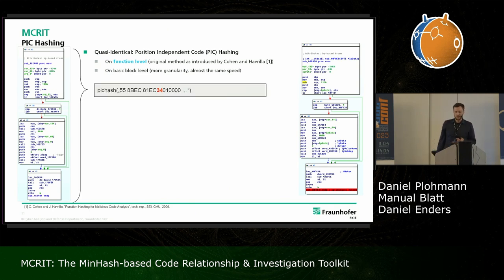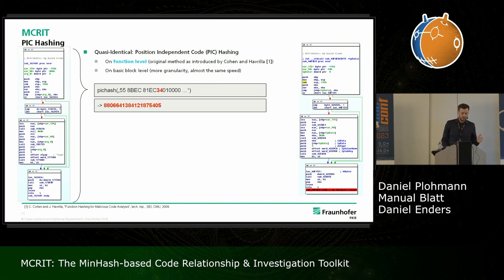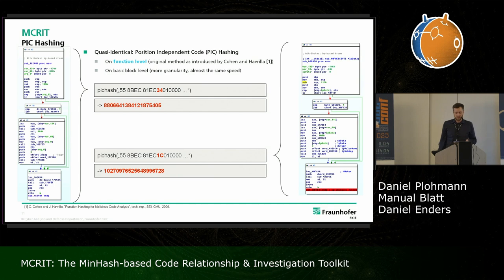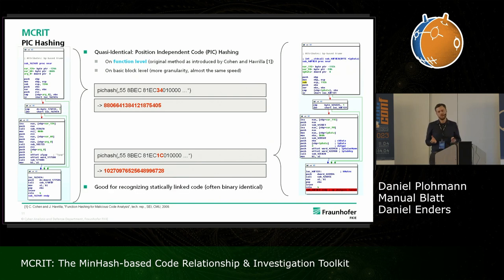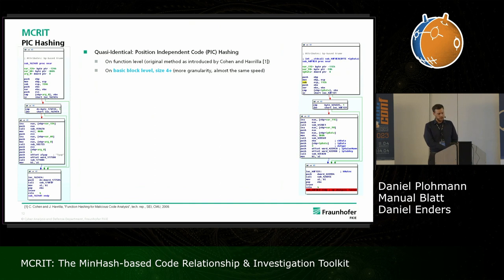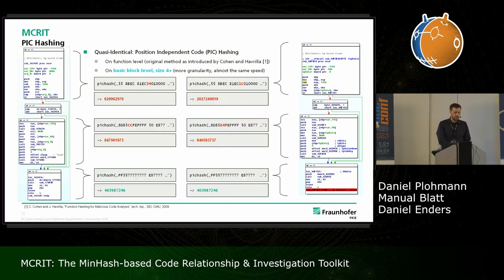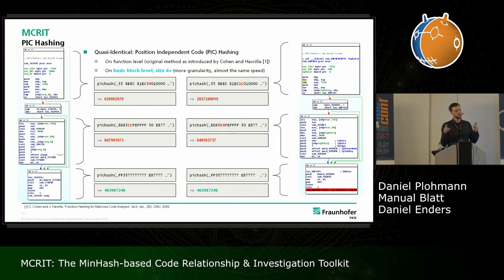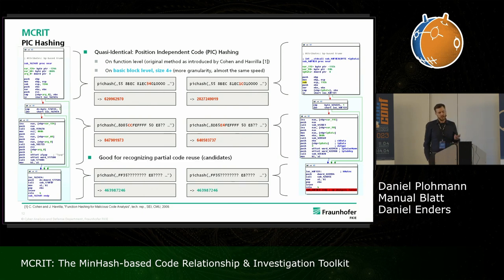If we hash the other function, we get a different hash - this is expected, because it's still a very good technique if you want to recognize statically linked code, which is basically always exactly the same. We're also doing this on basic block level, which is where it gets a bit more interesting. It might happen that your blocks are not the same, but you at least have a higher chance that some blocks are already identical. And even those can be good indicators of where to look. The whole idea of this framework is to point you towards those blocks in the first place - this is a good technique to identify candidates for potential code reuse.